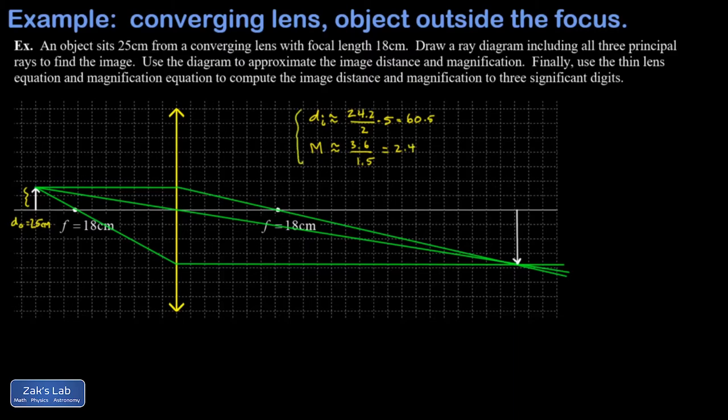I use the thin lens equation to get the image distance. I'm going to solve for 1 over di, which equals 1 over f minus 1 over do. So, 1 over the focal length (18) minus 1 over the object distance (25). You can do this all at once in a calculator: 1 over 18 minus 1 over 25, then 1 over that answer. I get 64.3 for the image distance—that's not too far off our ray diagram approximation.